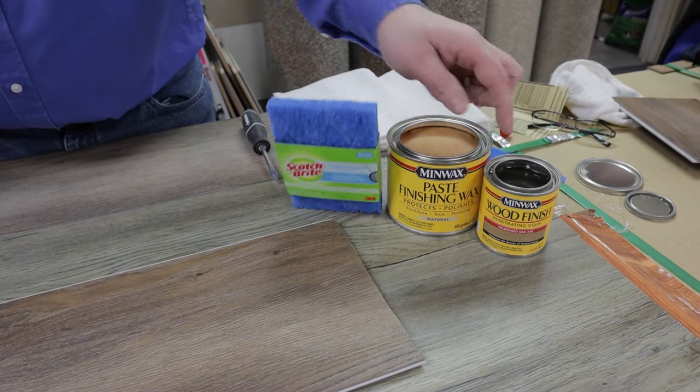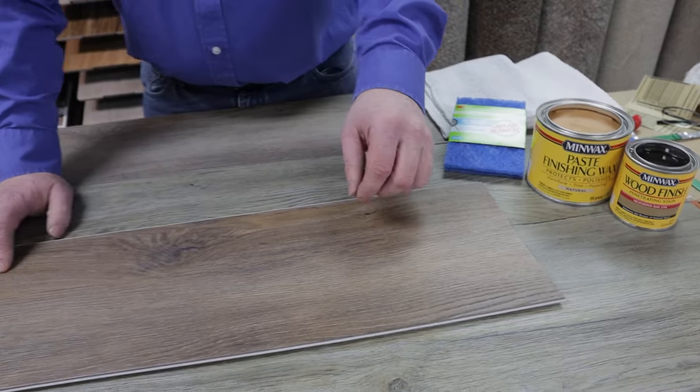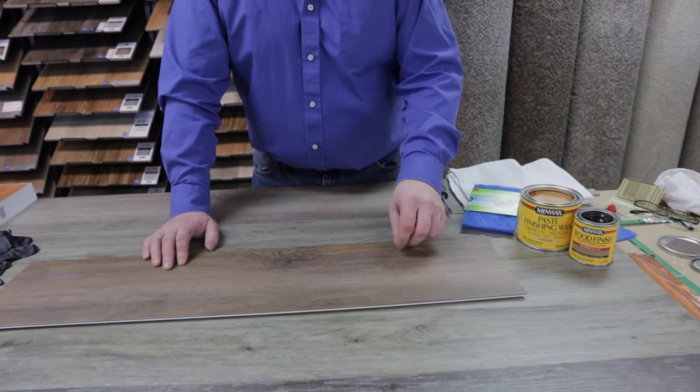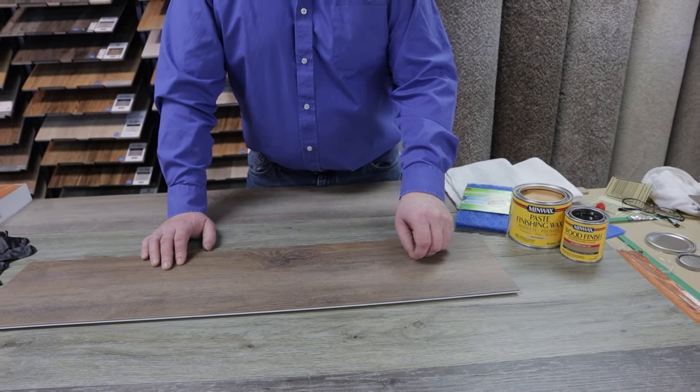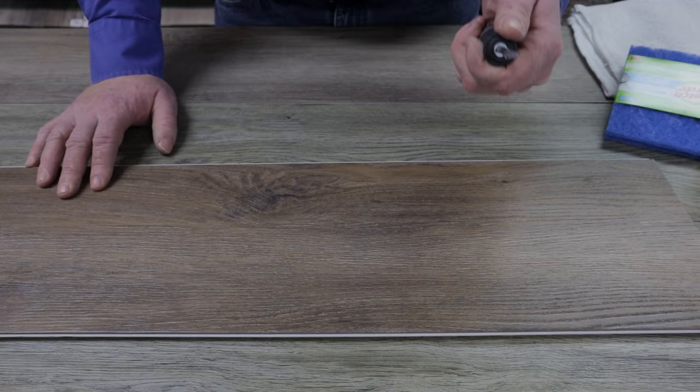You'll also want to get paste wax and a stain. For the stain, you want something that will match your flooring. You can also use a permanent marker or one of the stain pens or pencils that are available to help blend it in.